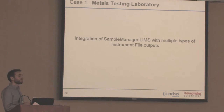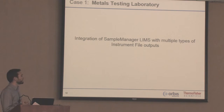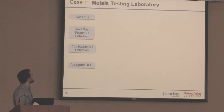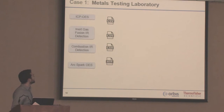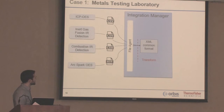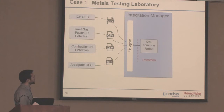The first case study is a metals testing laboratory. This is a one-way instrument integration with sample management from a number of instrument types. The instruments integrated include an ICP-OAS, a couple of IRs, and an AA spectrometer. These produce their own unique file formats — three CSVs and an RTF. Integration Manager used a file agent to pick up each of these different file types from different locations, with each file type having its own integration point.